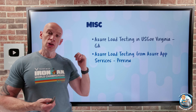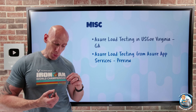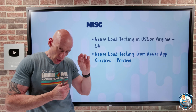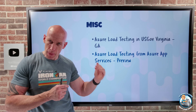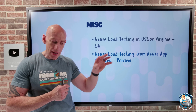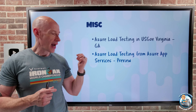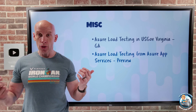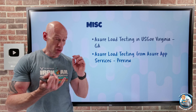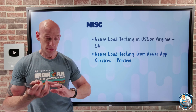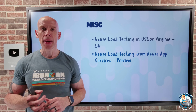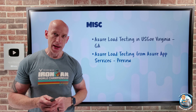Azure Load Testing is now also available from the Azure App Service portal. If you go to the load testing option — currently in preview in the navigation menu in your app service — under the performance category, you can trigger an Azure Load Test without creating a JMeter script. Just specify the request parameters and your load configuration, and it will give you both client-side and server-side metrics associated with that Azure Load Test.